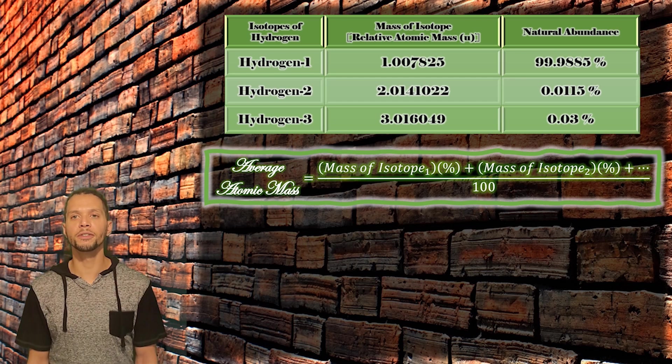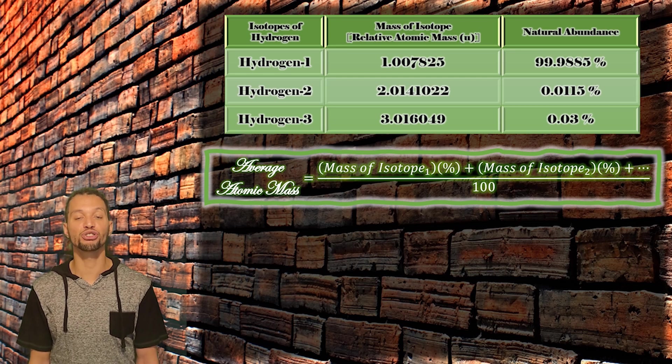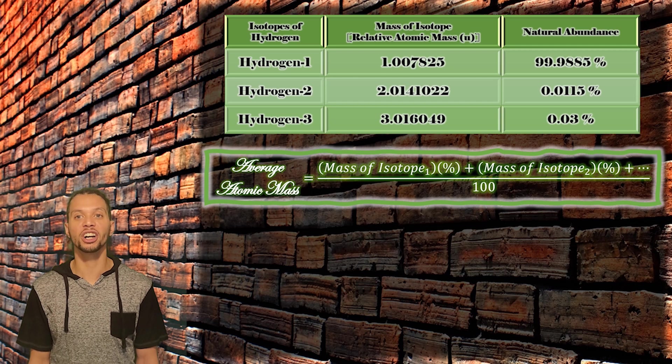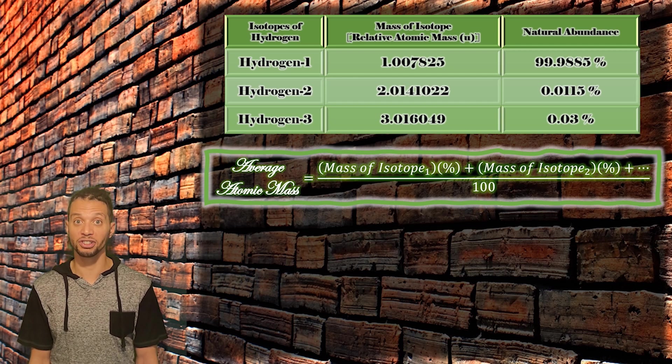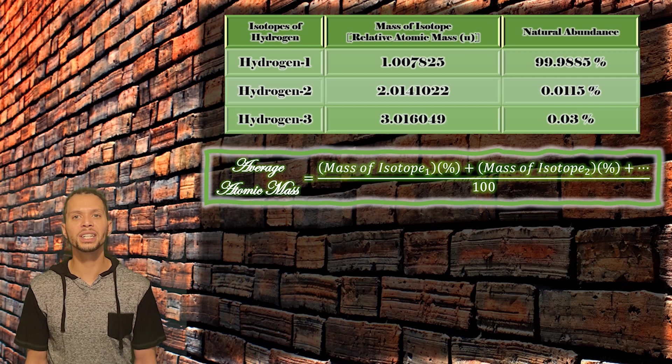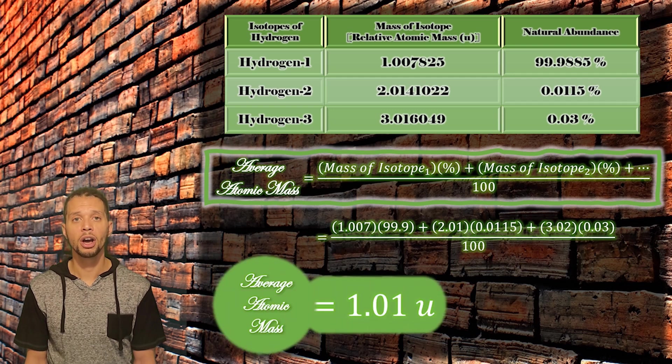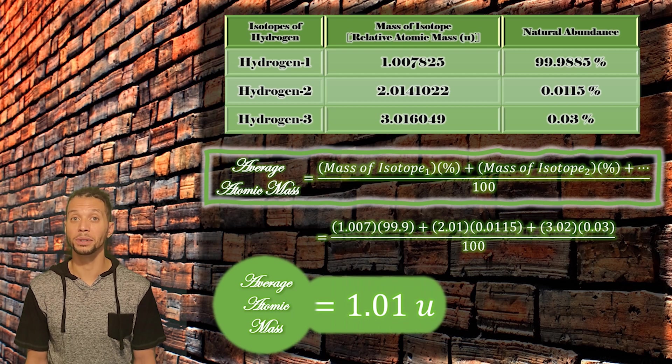The formula for calculating the average atomic mass of an element is the sum of the masses multiplied by the natural abundance of each isotope, divided by 100 because we are using percentages. Plugging in our measurements for hydrogen, we can calculate an average atomic mass of the element hydrogen of 1.01 AMUs, or just lowercase u.